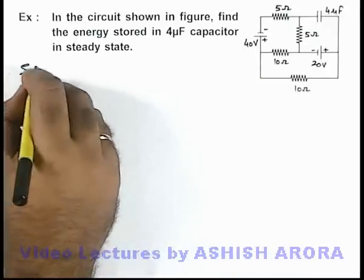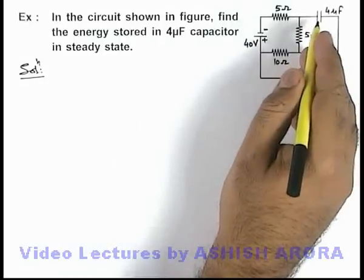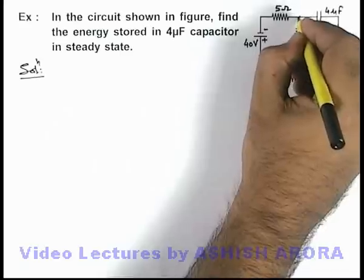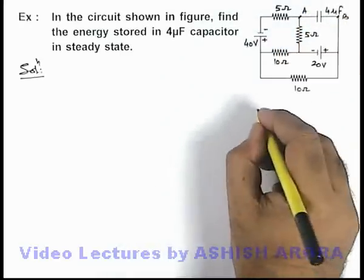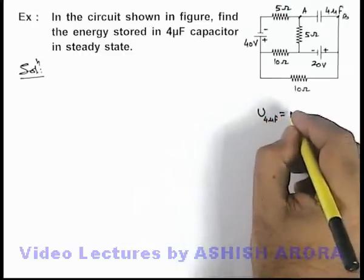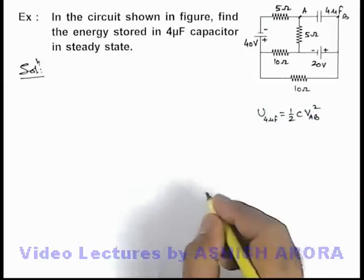If we wish to find out the energy in the 4 microfarad capacitor, we need to calculate the potential difference across the capacitor. Say if this terminal is a and this terminal is b, then energy stored in this 4 microfarad capacitor can be given as half C multiplied by potential difference between a b square.